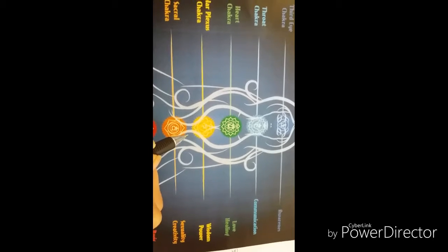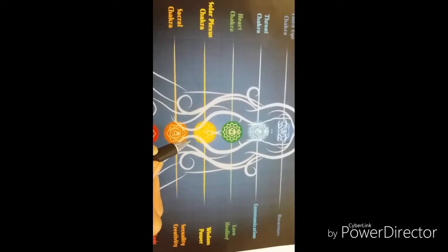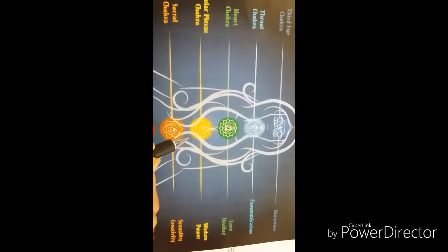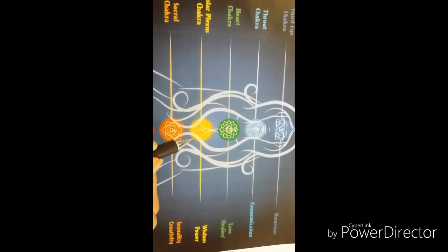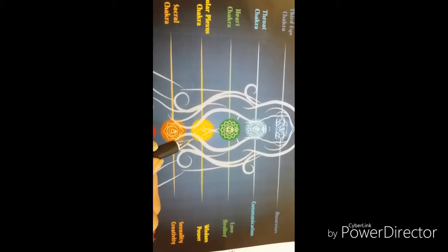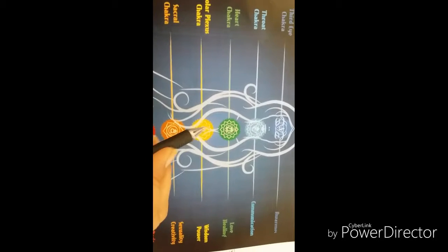It's related to our ability to be confident and in control of our lives. The location is the upper abdomen, in the stomach area. Emotional issues related to this chakra are self-worth, self-confidence, and self-esteem. Physical associations include the central nervous system.